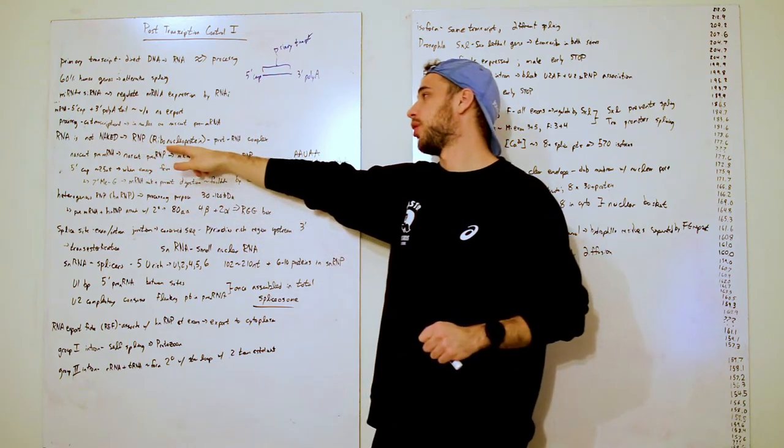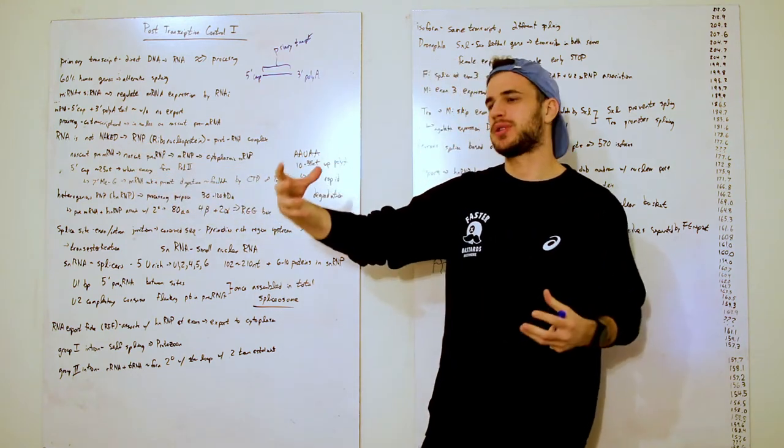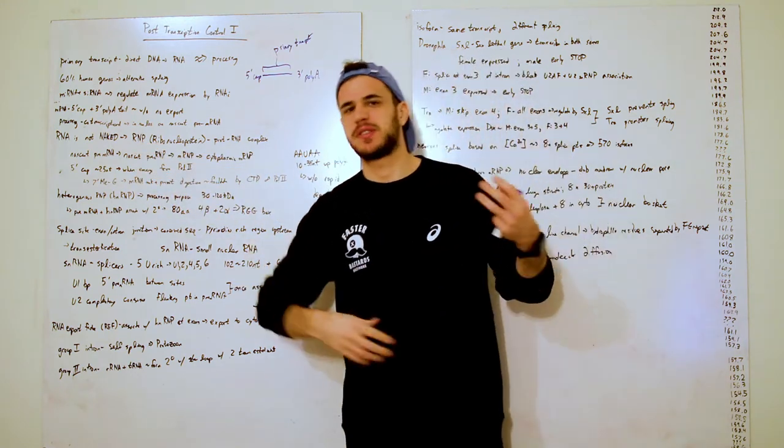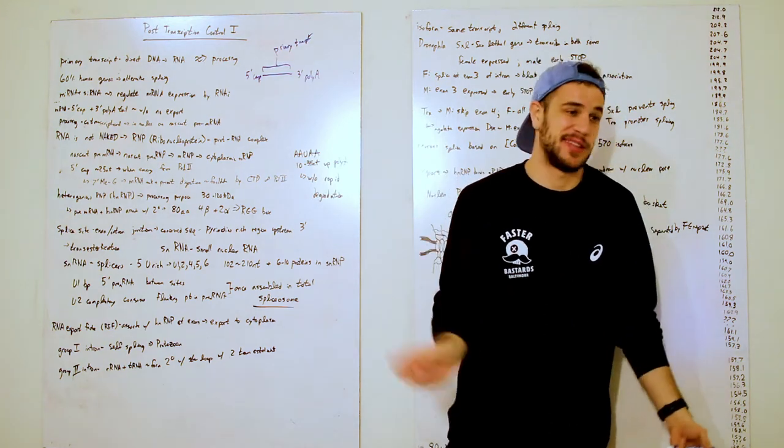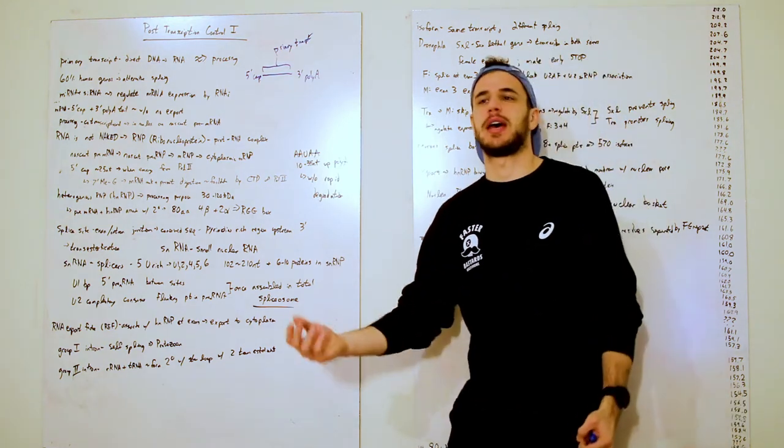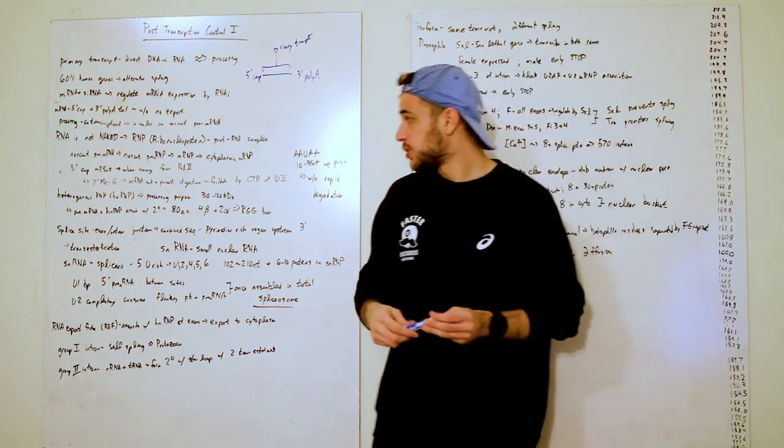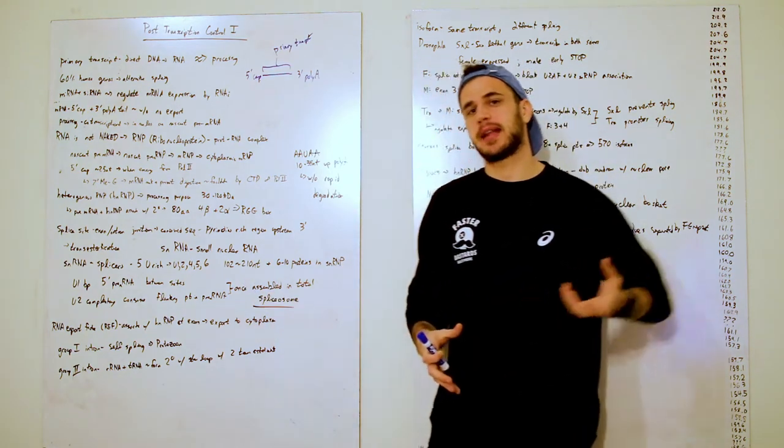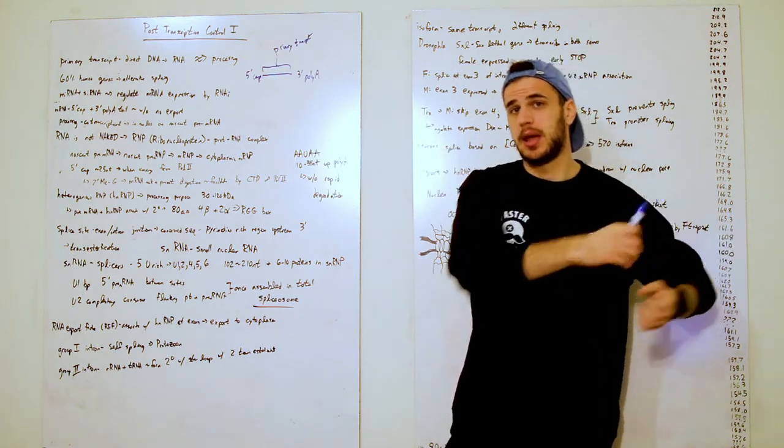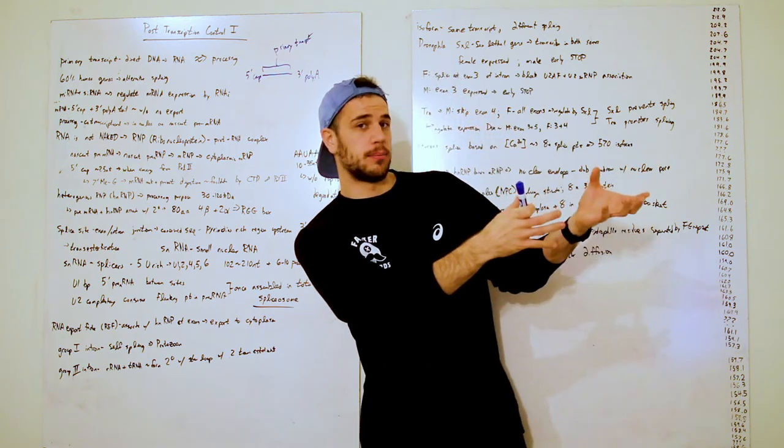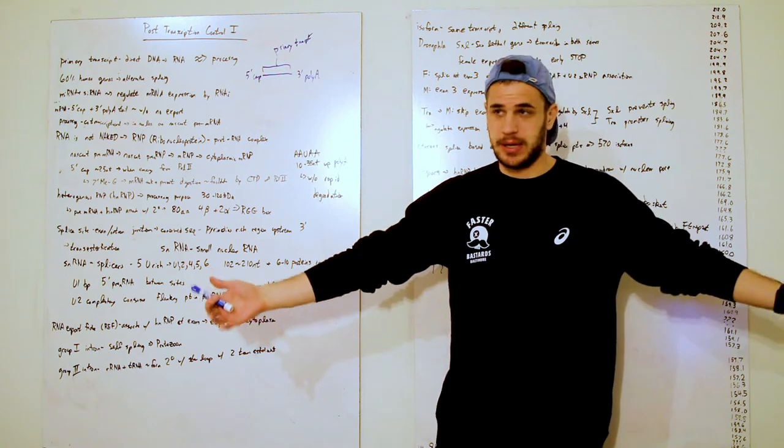And what we call these guys are ribonucleoproteins, RNPs, which is just a protein-RNA complex and that helps facilitate everything that happens with these RNAs. It helps make them into proteins, helps digest them. It helps everything go along, get on steady. So, what happens is you get a nascent mRNA. Some proteins attached, so then you get a nascent RNP. And then you've got it actually make out into the RNP. And then it's exported as a cytoplasmic RNP.